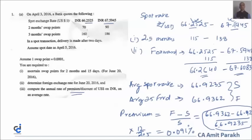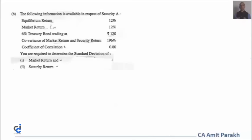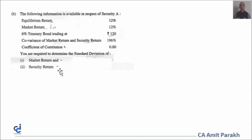Let's move to the next question. The following information is available for security A: equilibrium return of the stock, market return 12%, a 6% treasury bond trading at 120, covariance of market return and security return, and coefficient of correlation. We are required to determine the standard deviation of market return and the standard deviation of the security return.